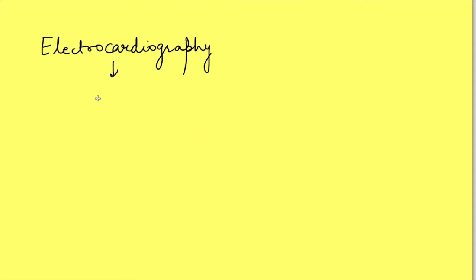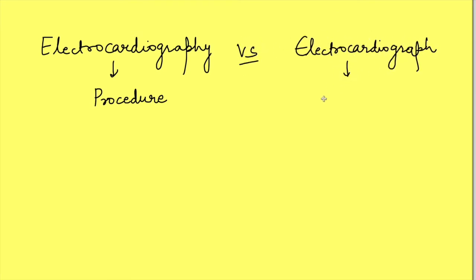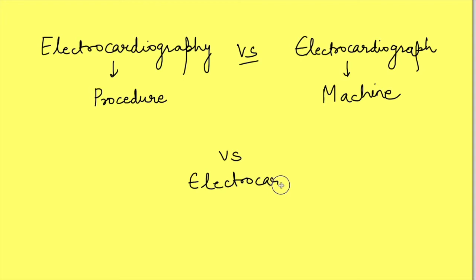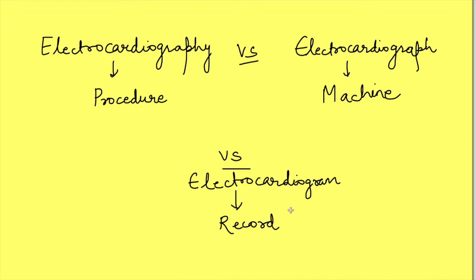Electrocardiography is the procedure of recording the spread of electrical activity in the heart. Electrocardiograph is the machine used to record this electrical activity, and the record obtained is known as electrocardiogram. Don't confuse - the record obtained is not known as a graph, it is known as electrocardiogram, while the machine is known as electrocardiograph.